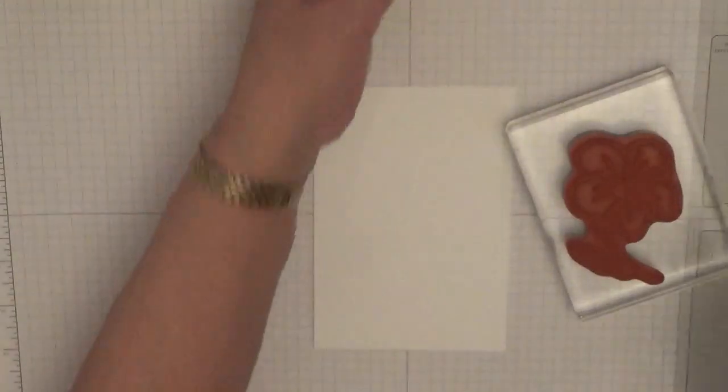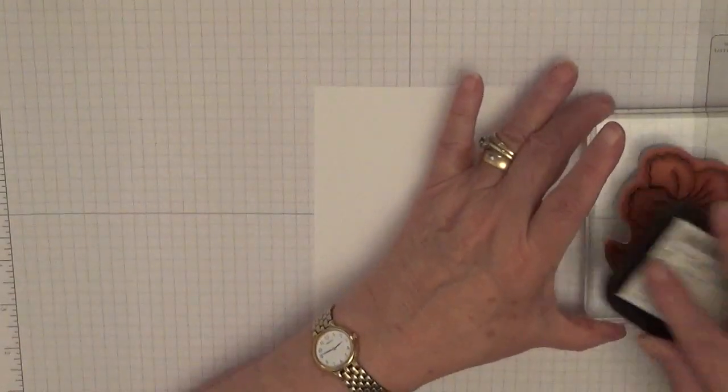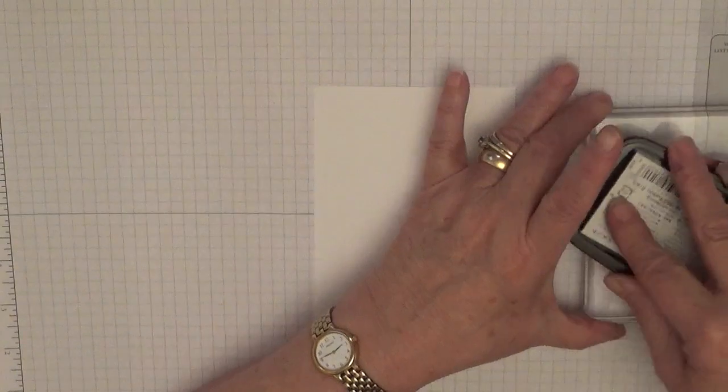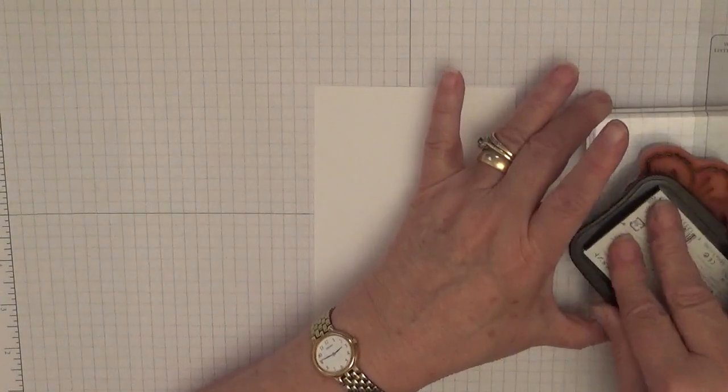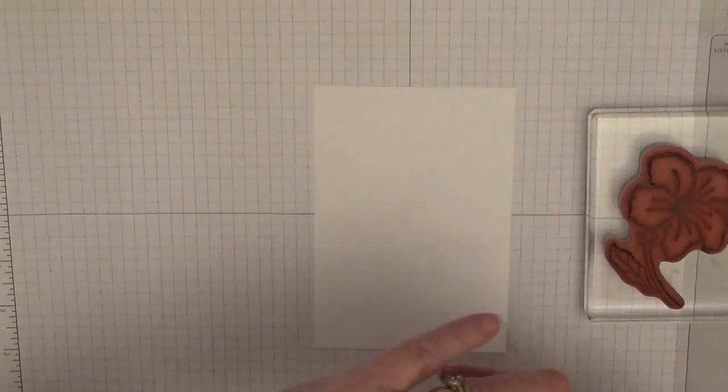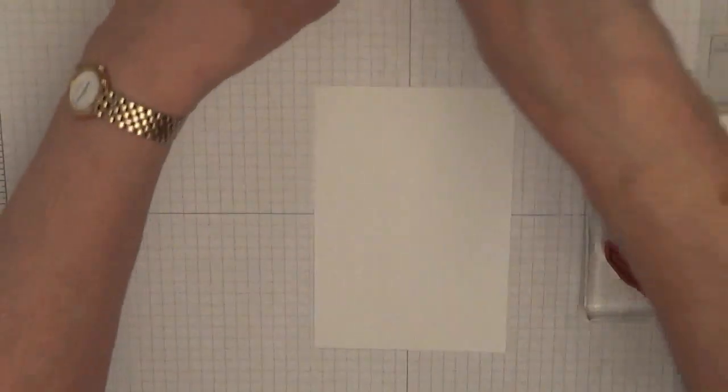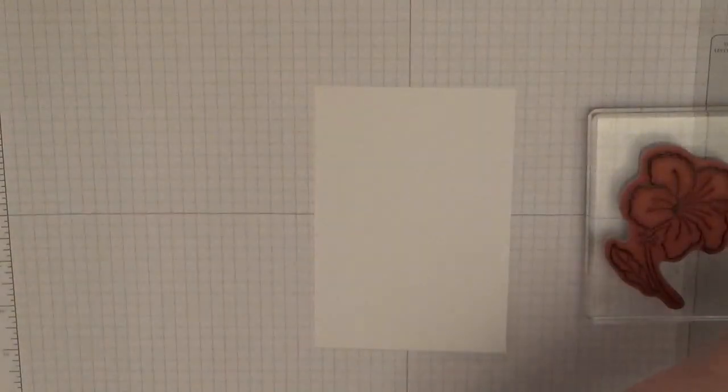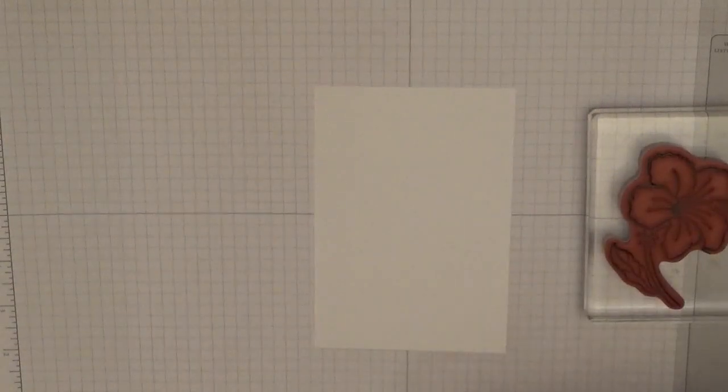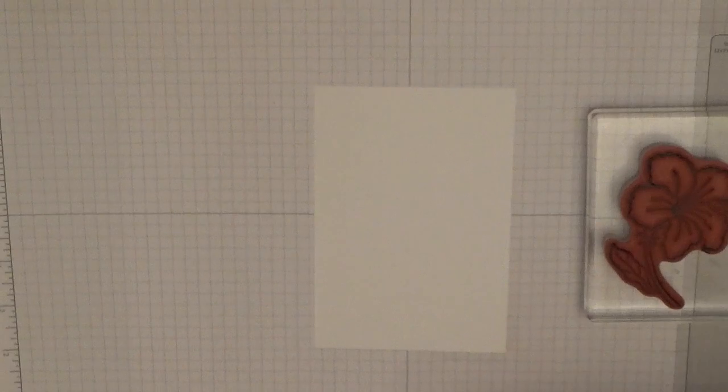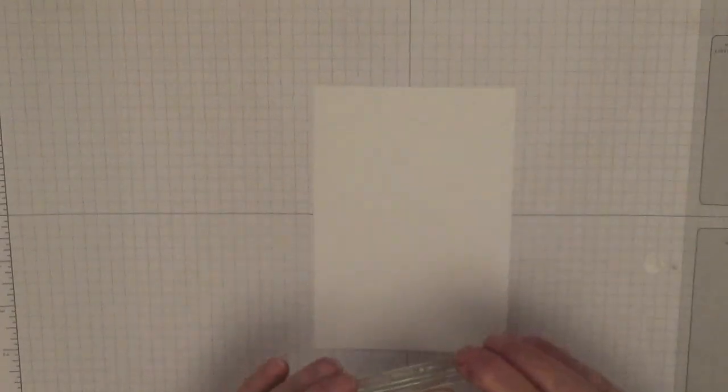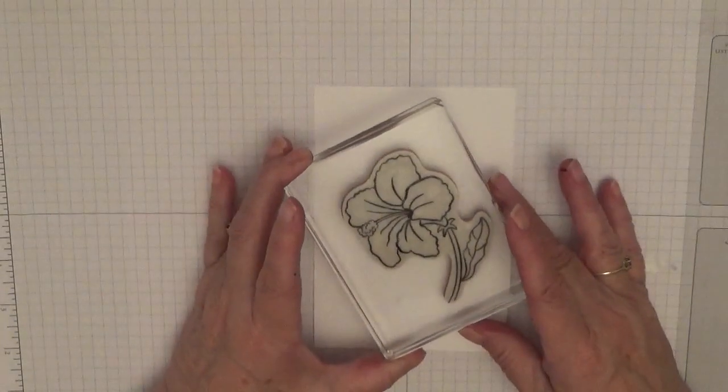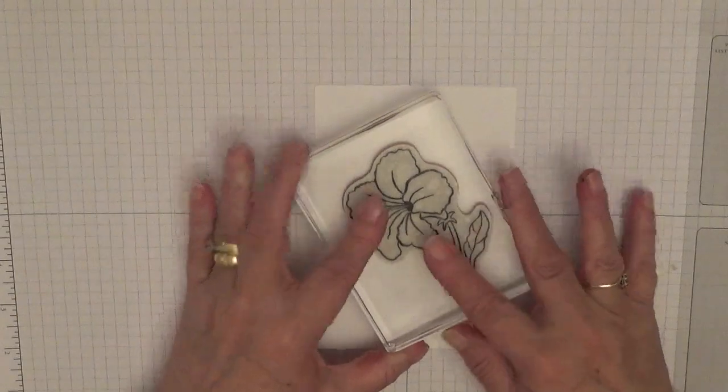So a little stamp, ink it up. I think I've got black ink on my fingertip, I have. Right, I'm going to stamp that in the middle.